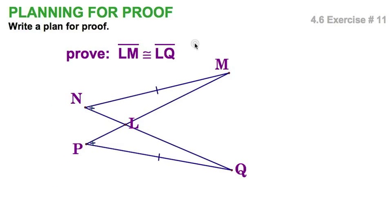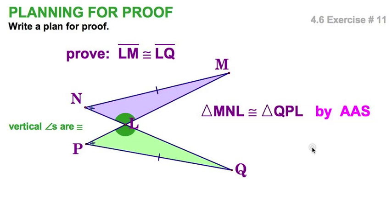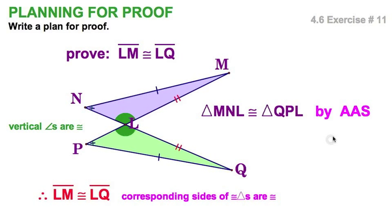Write a plan for proof — we're always doing that. Right here I've got a pair of vertical angles that are congruent. We know vertical angles are congruent by theorem 2.6. Therefore I've got a pair of congruent triangles by angle-angle-side. If it helps you to visualize, you can see that these two triangles are reflections of each other — angle, angle, side. Once the triangles are congruent, we can definitely say all their corresponding parts are congruent, and we're done.